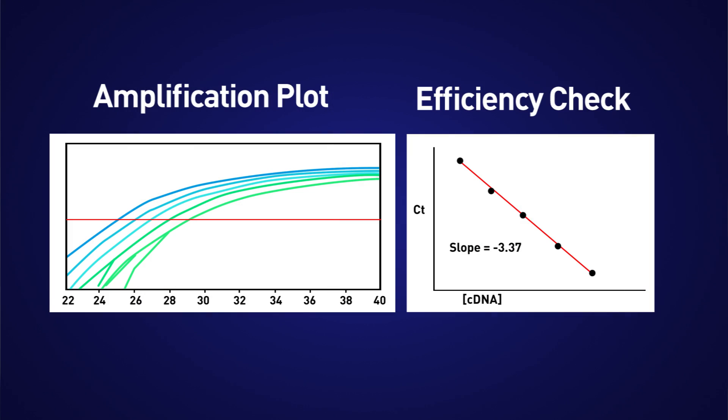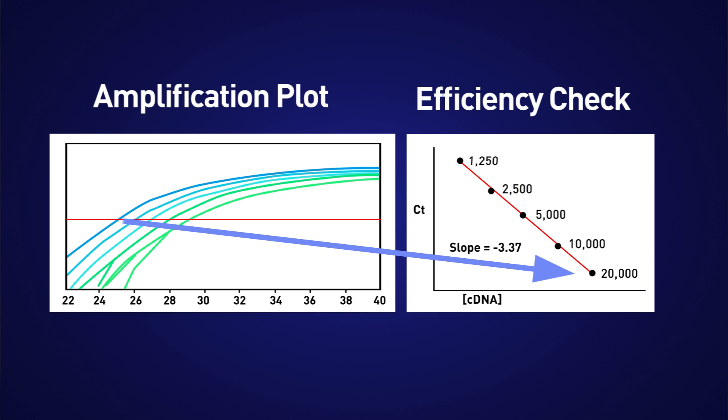Does the efficiency for all of my targets have to be the same? Let's start with a quick refresher on efficiency. The aim for all assays is to be 100% efficient, which means there is an exact doubling of your template every cycle. We previously found that this can be calculated through a dilution series and the following equation. In order to use the Delta Delta CT method for relative quantification, the efficiency of the target and endogenous control must be approximately equal, meaning that the assay efficiency should be within 10% of each other.